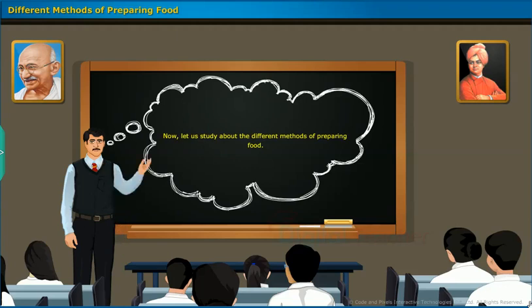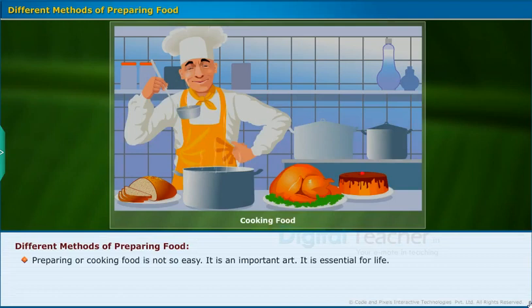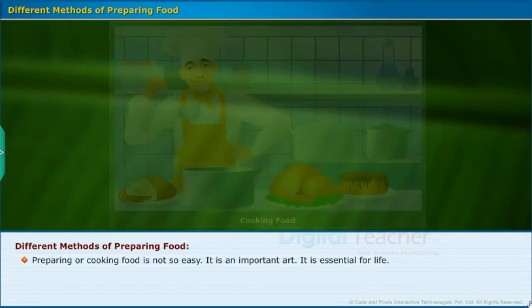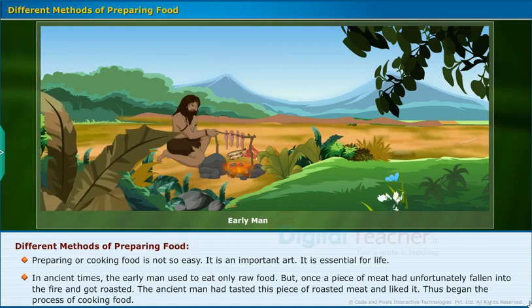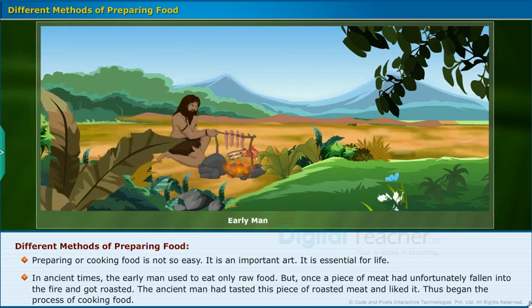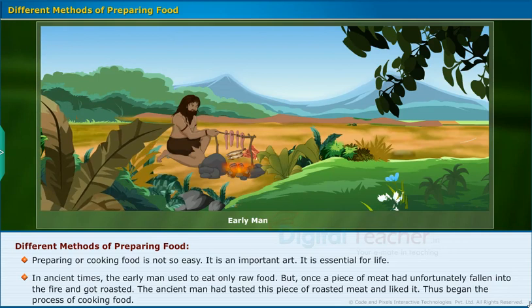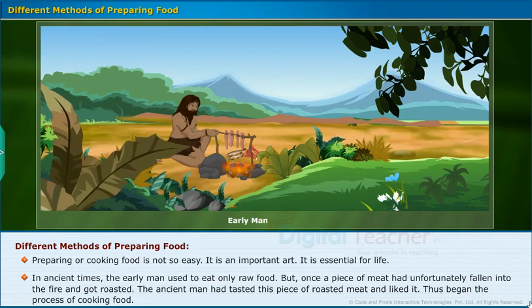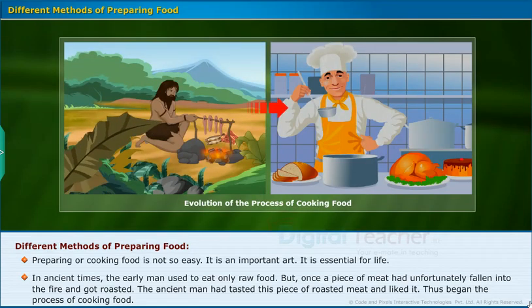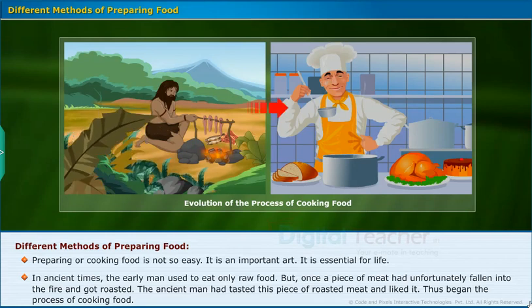Now let us study about the different methods of preparing food. Preparing or cooking food is not so easy — it is an important art and essential for life. In ancient times, early men used to eat only raw food. But once, a piece of meat had unfortunately fallen into fire and got roasted. The ancient man tasted this piece of roasted meat and liked it, and thus began the process of cooking food.